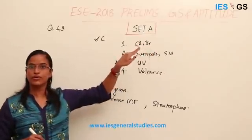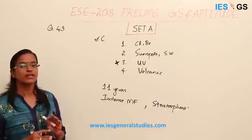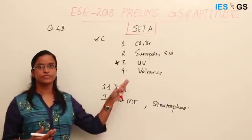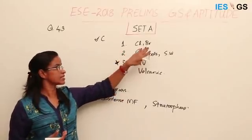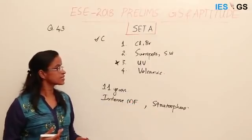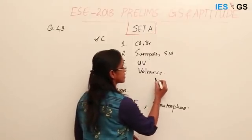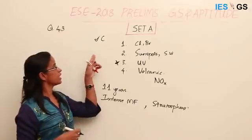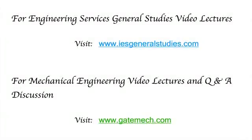Chlorine, bromine, and chlorofluorocarbons are the main reason for ozone depletion — discussed in our article on environmental degradation and in the ozone layer depletion section on our site. Volcanic eruptions also release certain gases like nitrous oxides, which can act as ozone-depleting substances. The answer is C. For engineering services general studies video lectures, visit www.isgeneralstudies.com. For mechanical engineering video lectures, visit www.gatemec.com.